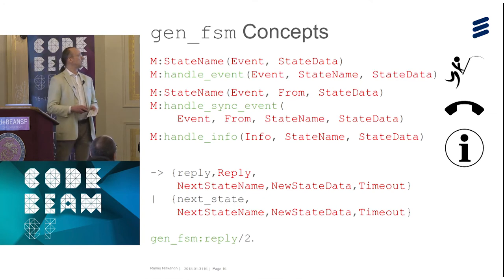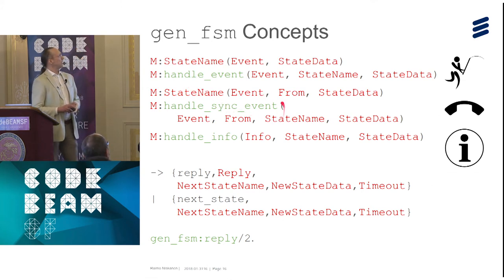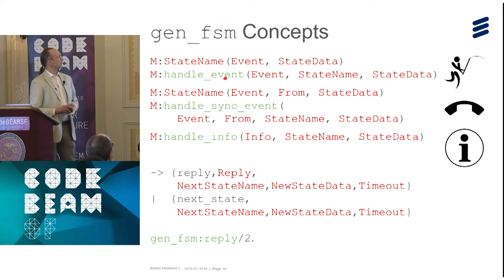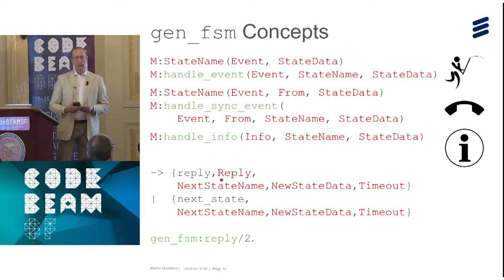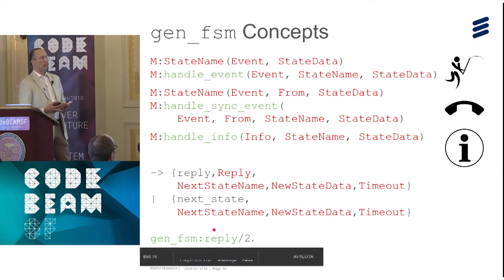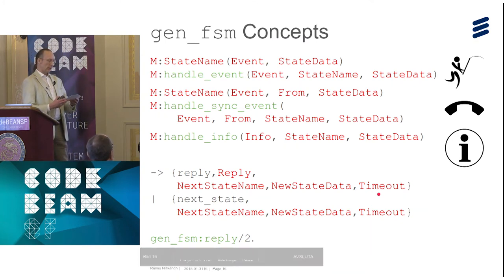gen_fsm has the same idea but calls them events and synchronous events instead of casts and calls. We have two variants: one that is state-specific and one that is not state-specific, for both calls and casts. The infos are all non-state-specific. The call variants may return a reply that shows up in the sys trace; if you use gen_fsm:reply, it will not. The timeout behaves the same as in gen_server.